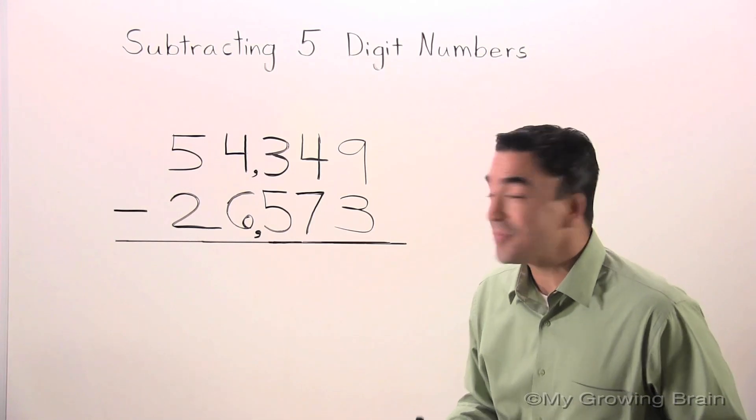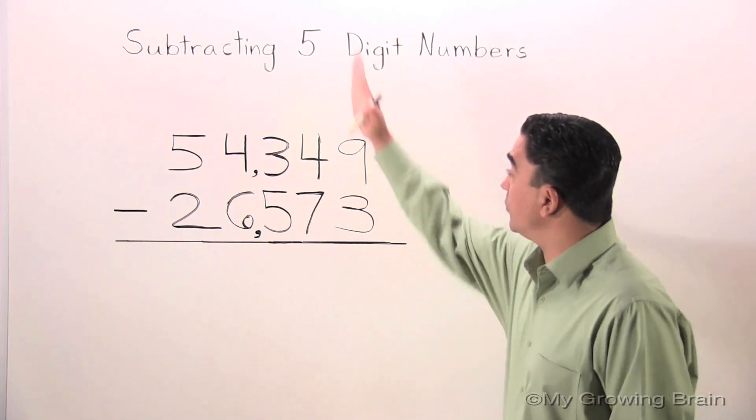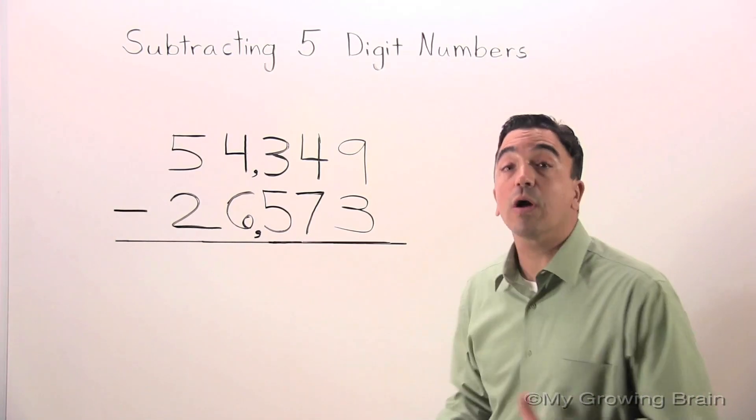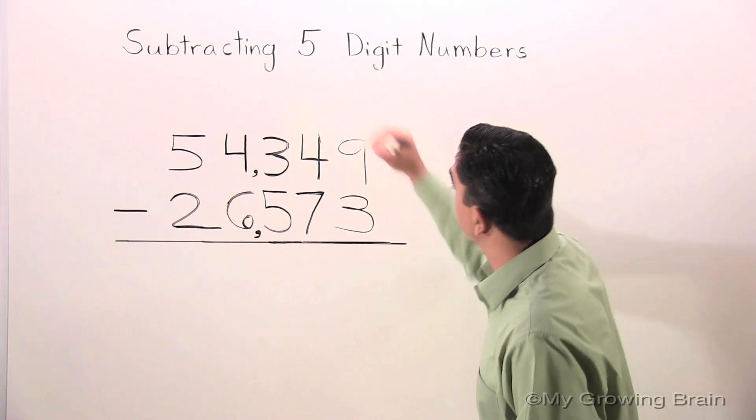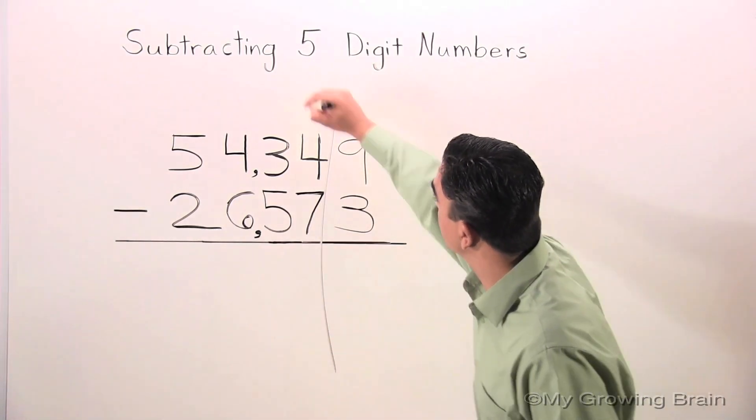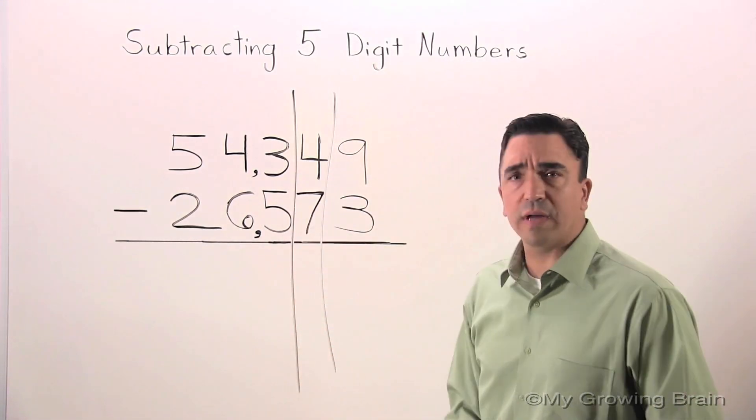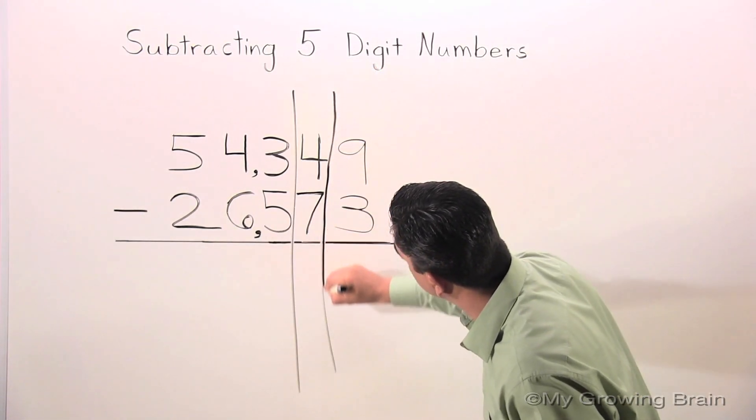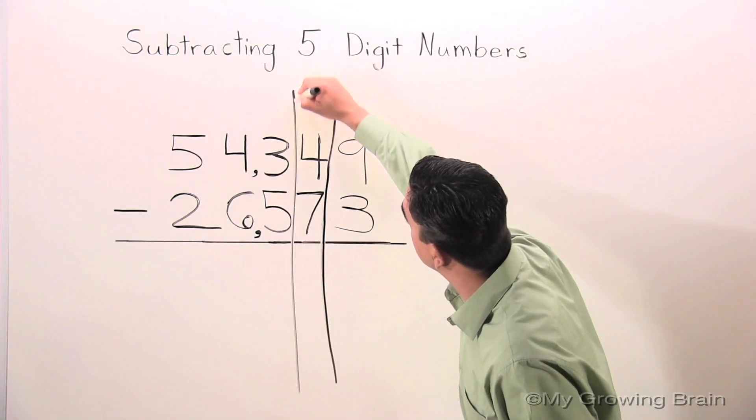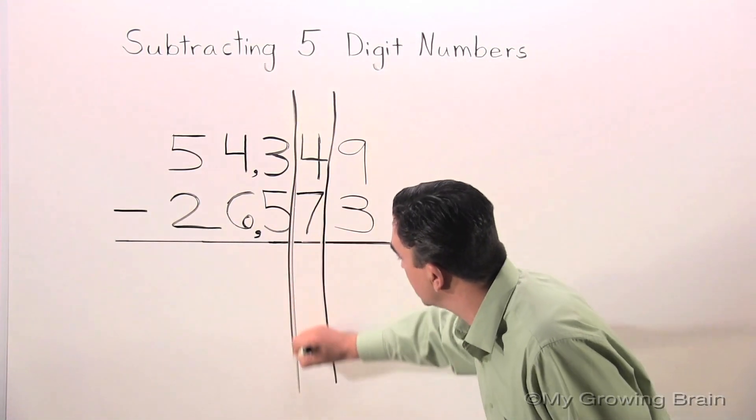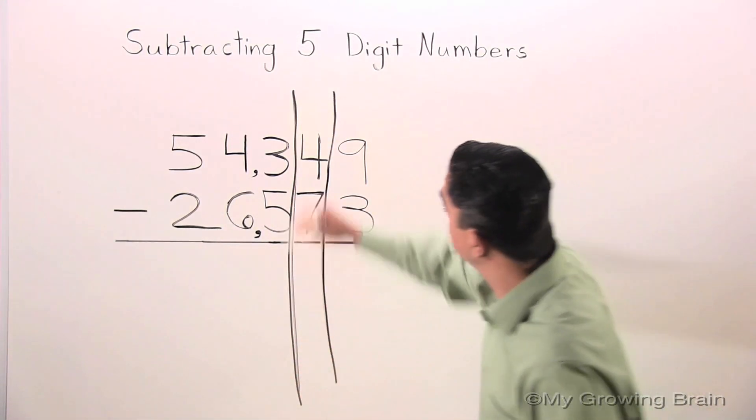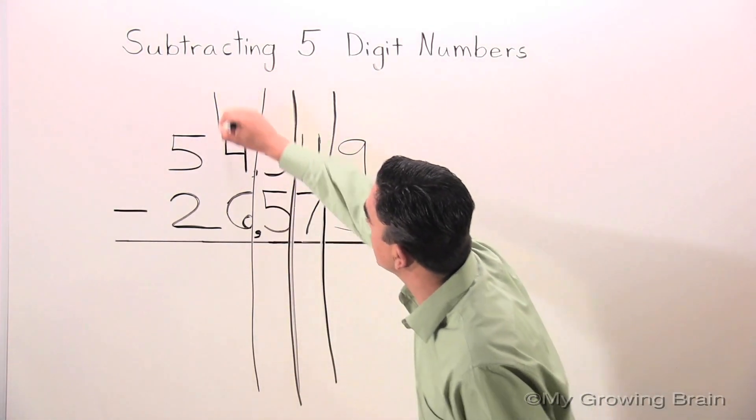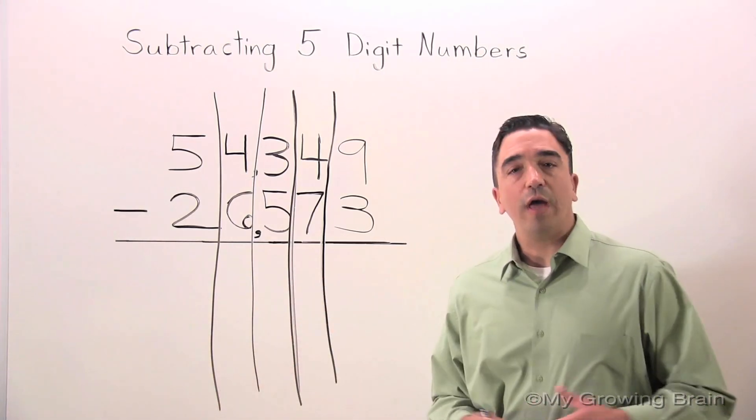Let's get to it. The first thing I want to do is draw lines to separate the digits. It will help me keep my work organized. Got to darken it in. Keep on going.